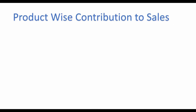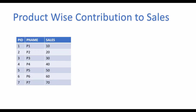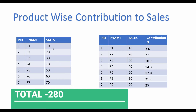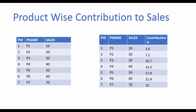For the first one, we have a table with three columns listing the sales of individual products. We need to come up with a query which will have an additional column listing the contribution of the respective product sales to the overall sales. For example, the total sales for this dataset is 280 and product 7 has sales of 70, which is why its contribution is listed as 25%.